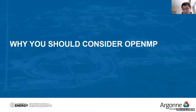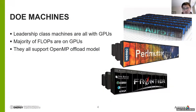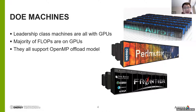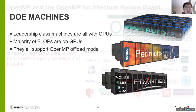Why should you consider OpenMP? DOE is bringing up new machines at the exascale level. There are also machines close to exascale, like Perlmutter at NERSC. Those machines all have GPU accelerators. Although they have extremely powerful CPUs, the majority of the floating-point operation capability is on the GPUs. So you need to orient your code toward those flops. All those machines support the OpenMP offload programming model — that's the first simple reason you need to think about OpenMP.